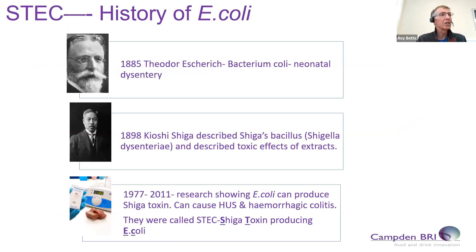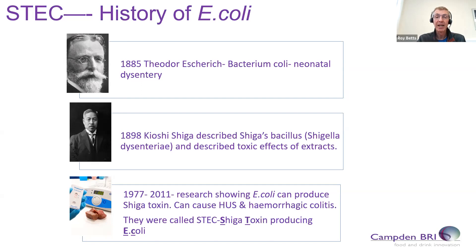Let's look a little bit at the history. It's always interesting to go back into the history of microbiology. We go back to 1885 when the Austrian bacteriologist Theodore Escherich isolated what he called bacterium coli from outbreaks of neonatal dysentery. Over time, this organism was renamed in honor of Theodore Escherich and became known as Escherichia coli. Then in 1898, Japanese bacteriologist Kyoshi Shiga described Shiga's bacillus — now known as Shigella dysenteriae — and described the toxic effects of cell-free extracts of that organism, which clearly contained Shiga toxin, the same toxin we find in Shiga toxin-producing E. coli.